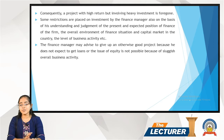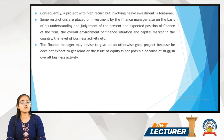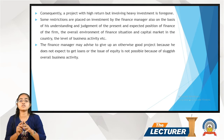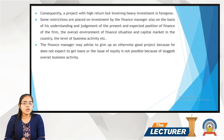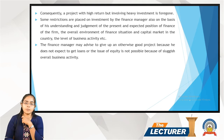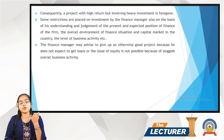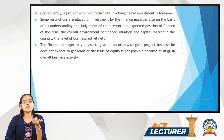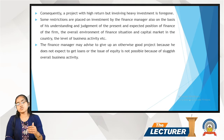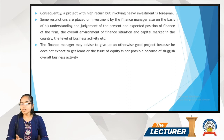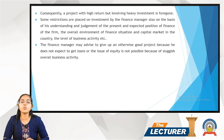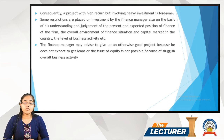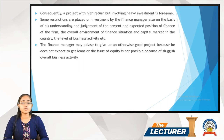The firm may not expect to get loans, and the issue of equity is not possible because of sluggish overall business activity. If the market activity is sluggish or in a downturn, it is highly difficult to get your project accepted. If business activity is favourable, acceptance is more likely. If you have access to a market loan, the chances are higher; otherwise, options will be very narrow.